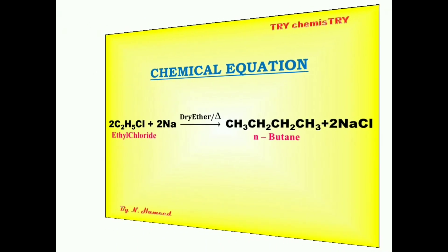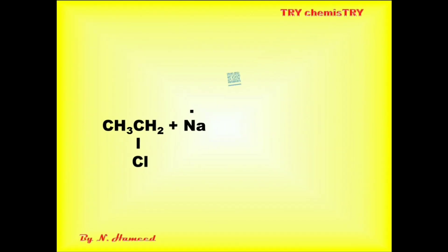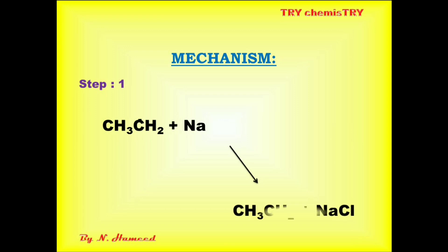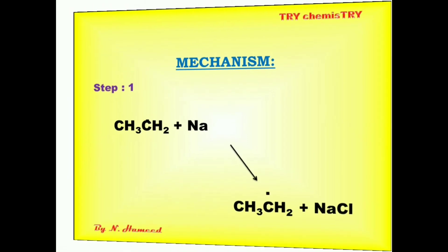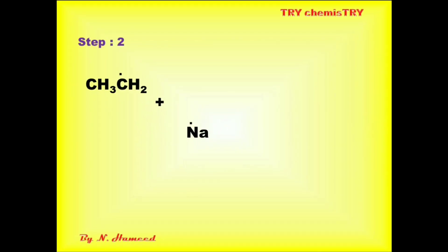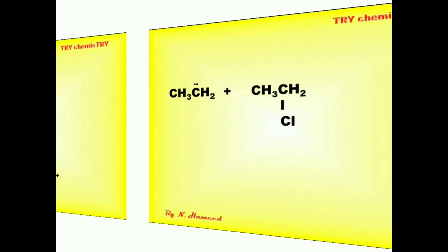Now we can see the mechanism of the reaction. There are three steps. In the first step, the sodium metal donates an electron to the alpha carbon present in the ethyl chloride. The carbon leaves the chlorine as a chloride ion. The chloride ion combines with sodium to give sodium chloride, and we get a free radical. Again, one more sodium atom donates an electron to the hydrocarbon.